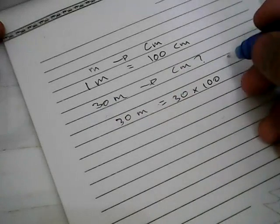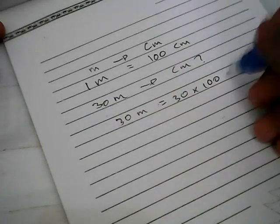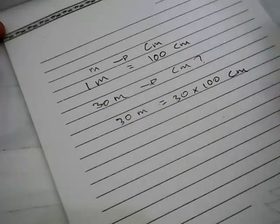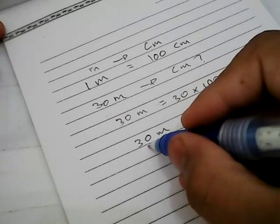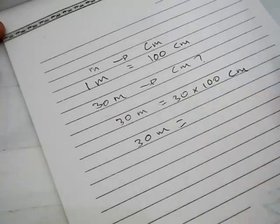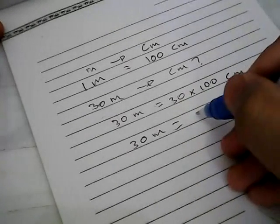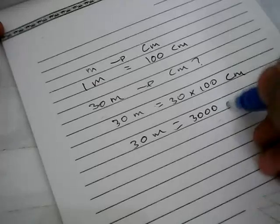Alright, we calculate this 30 times 100 centimeter. So the result is 30 meter is equal to 3000 centimeter. Well, that's it.